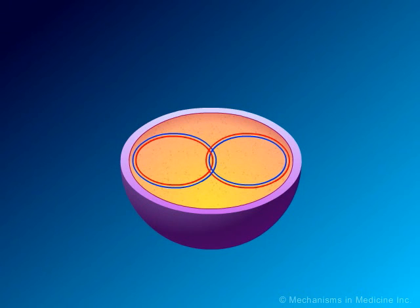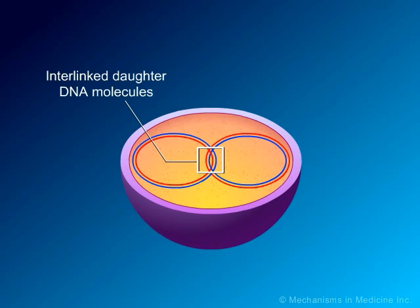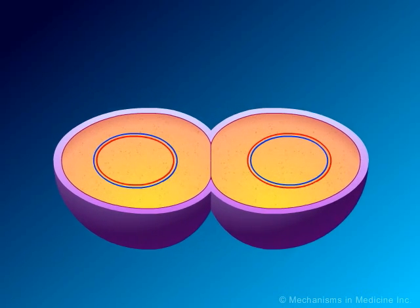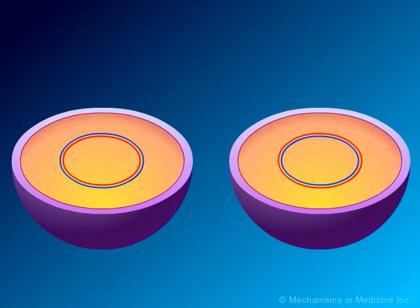Eventually, as the two replication forks meet, two new complete chromosomes have been made, each consisting of one old and one new strand of DNA. This is referred to as semi-conservative replication. In order to allow the two new interlinked chromosomes to come apart, another bacterial enzyme is needed, known as topoisomerase IV. This enzyme is structurally related to DNA gyrase and is coded for by the PARC and PARE genes. Topoisomerase IV allows for the two new interlinked chromosomes to separate, so that they can be segregated into two new daughter bacterial cells.